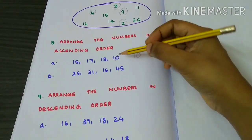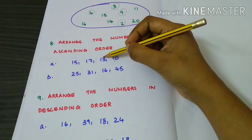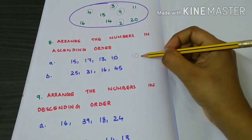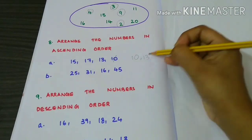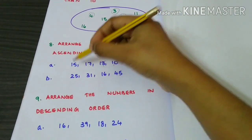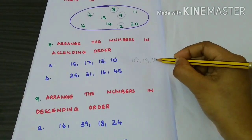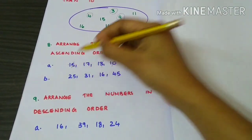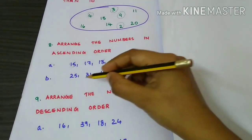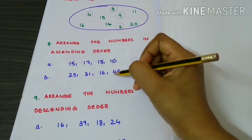Then next, we have to identify the next smallest number — it is 13. Then 15, then 17. Next set: 25, 31, 16, 45.